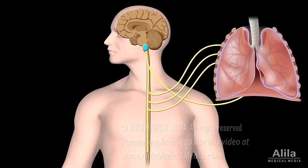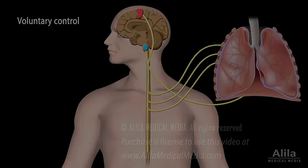While breathing is mostly involuntary, some degree of voluntary control is possible — for example, during singing, playing wind instruments, or holding breath underwater. In this case, the control originates from the primary motor cortex, which sends signals directly to the spinal cord, bypassing the respiratory center in the brainstem. There are limits, however, to the extent one can control their breath, even though it is possible to increase these limits with training.